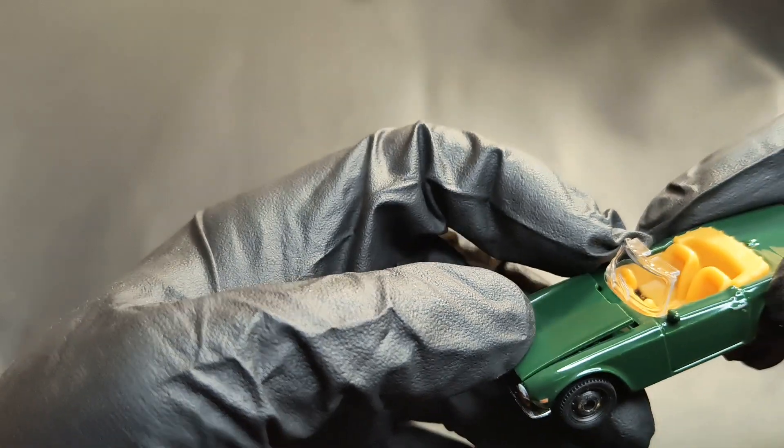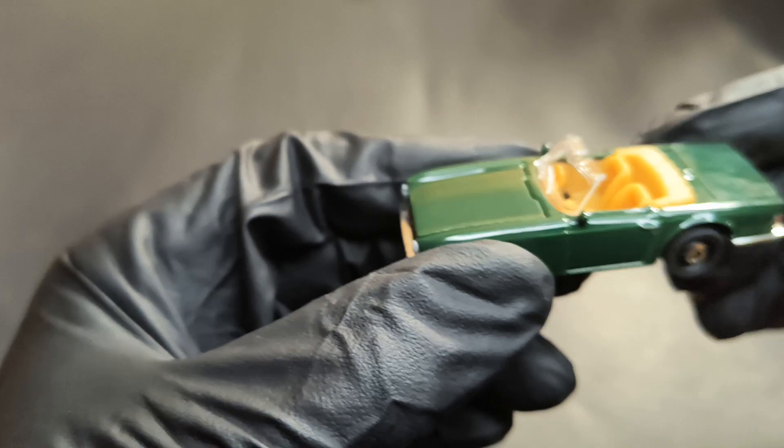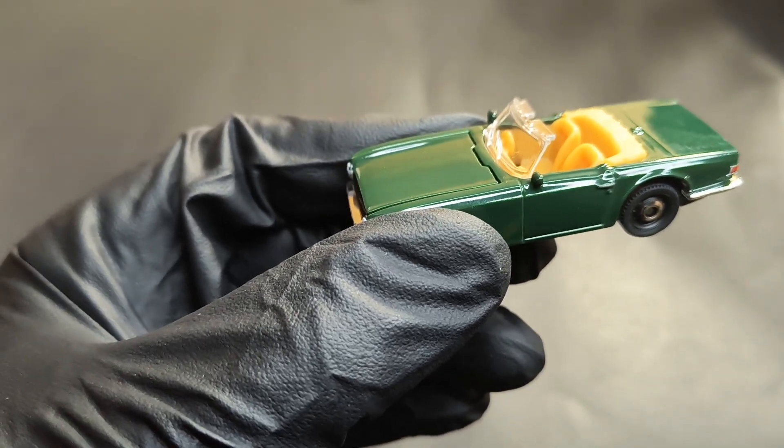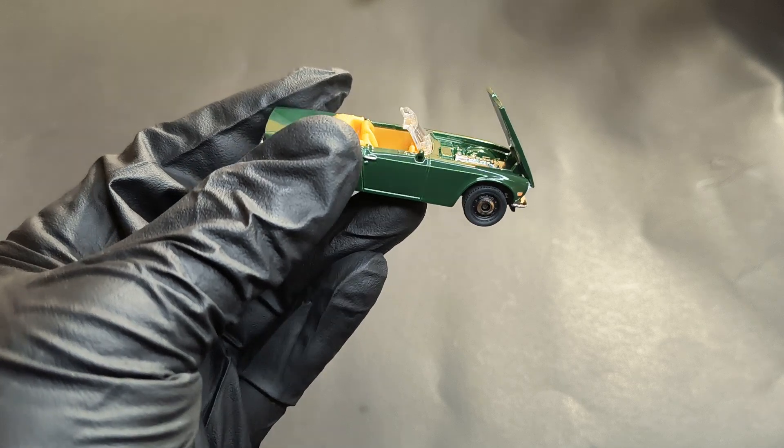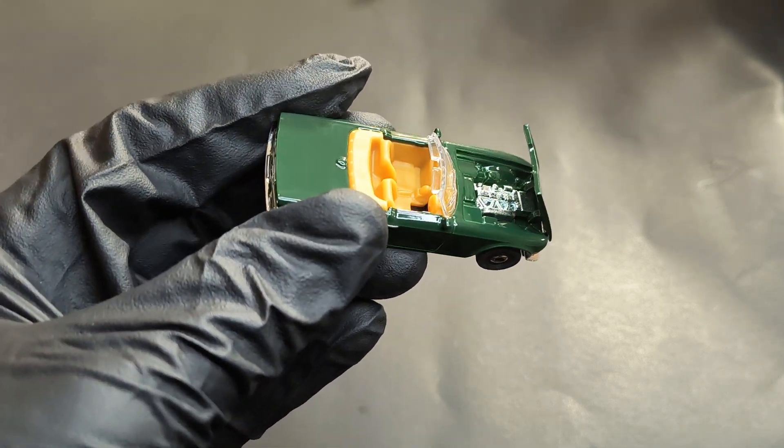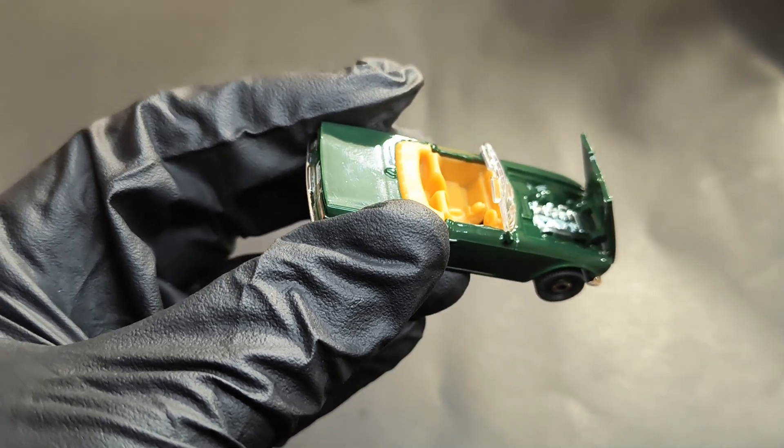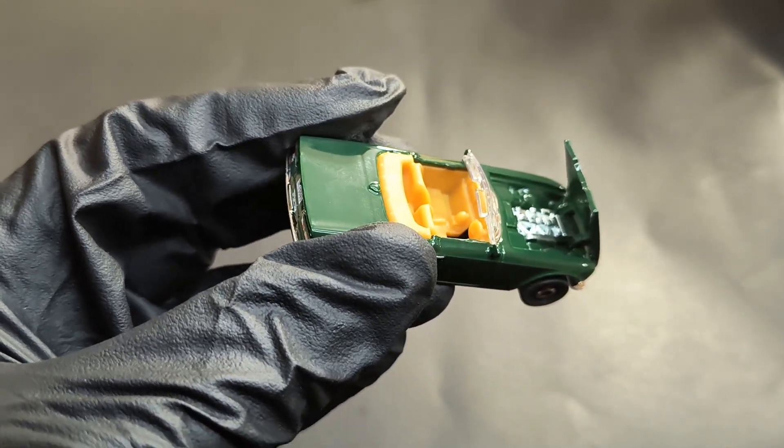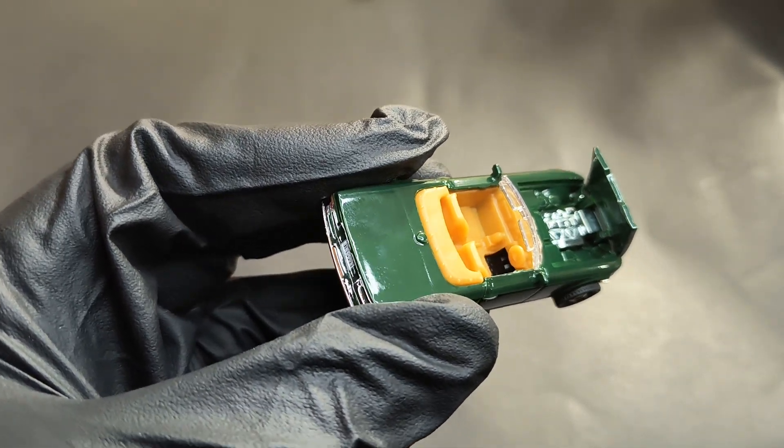The hood opens up. Like all the Triumphs, or most of the Triumphs, it opens the other way around. So I'm going to open it and show you what's inside. Once you open the hood, you can see the engine bay. Unlike some other Matchbox where the details are very good on the engine bed, this one doesn't have that many details, but you can see...